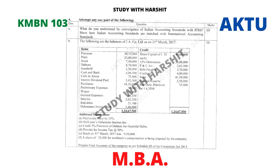Question B: The following are the balances of GA Company on 31st March 2017. Prepare the final accounts of the company as per Schedule III of the Companies Act 2013.